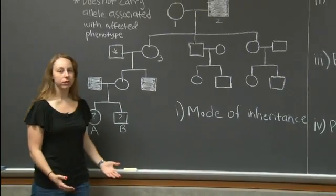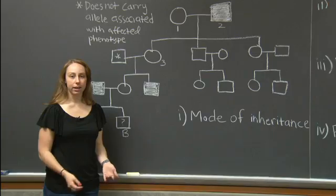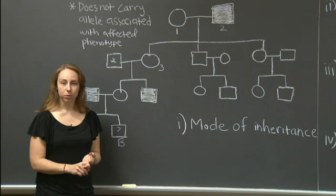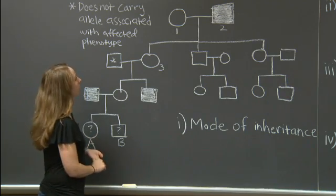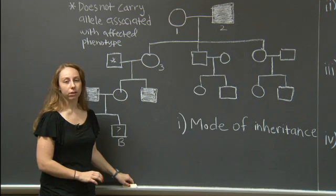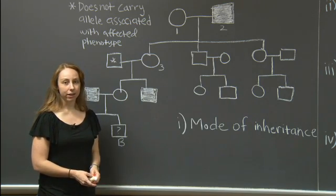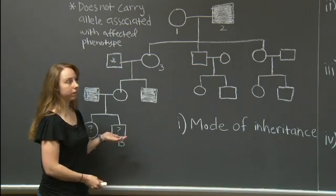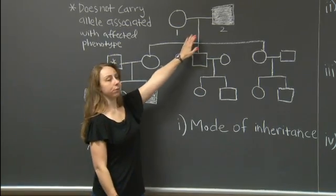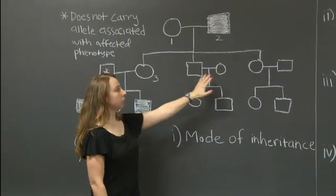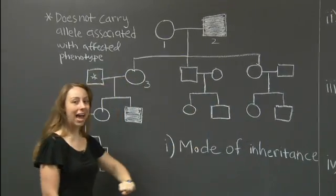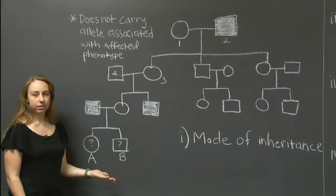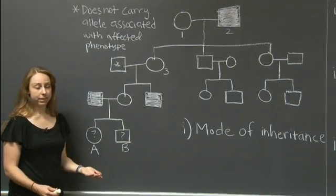We know that there are two main types of modes of inheritance. It can either be dominant or recessive, and from there it can either be autosomal or X-linked. If a disease follows a dominant inheritance pattern, generally it must be present in every generation. Here we notice that the disease is present in the first generation, but it's not present in anyone in the second generation. However, then it reappears in the third generation. This suggests that the disease is recessive.